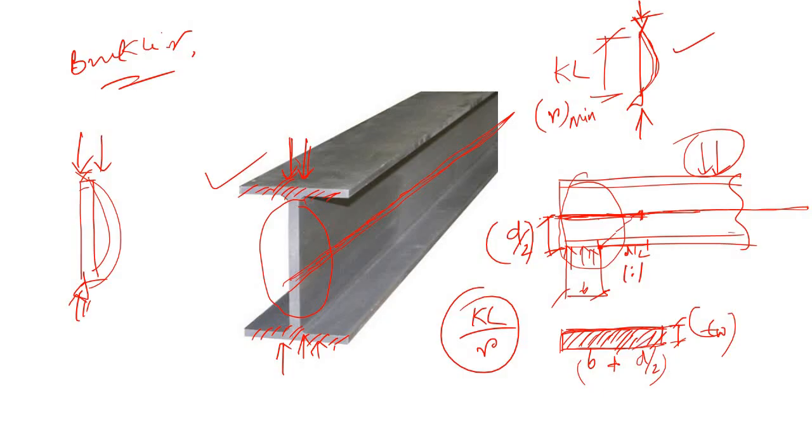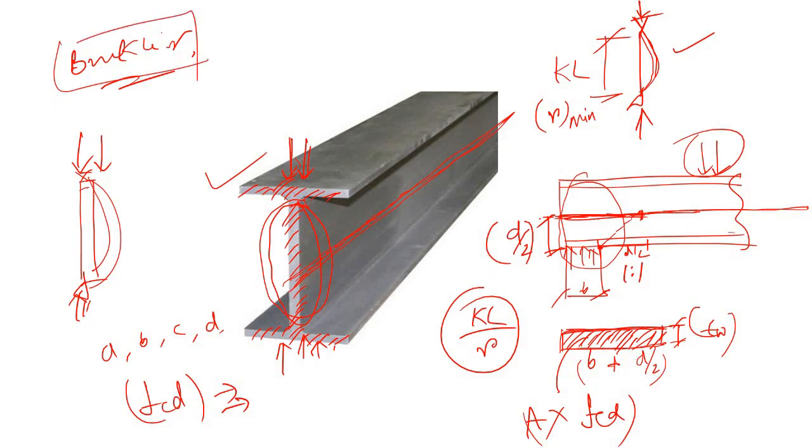This is the effective length of the web, and based on the buckling class - whether it is class A, B, C, or D - you can find out the allowable compressive stress. If we multiply this cross-sectional area with this fcd, we will get the web buckling strength.